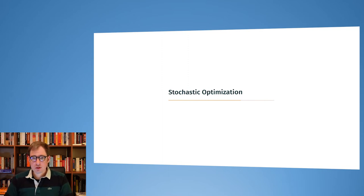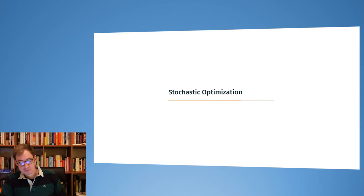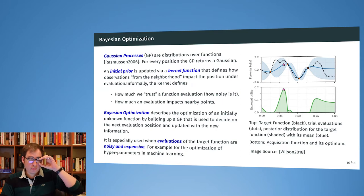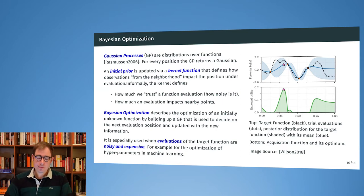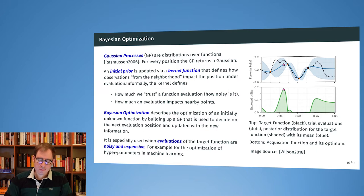The last topic is stochastic optimization. In many cases we don't have deterministic functions that we can just evaluate and always get the same output. The problem is that oftentimes we are optimizing some real-world process, and a real-world process is often noisy and will not give us back the same result every time.